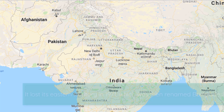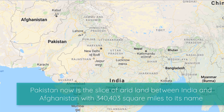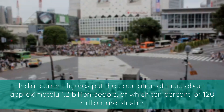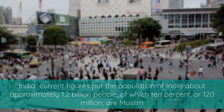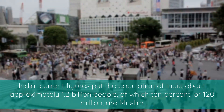Pakistan used to have territory on both the east and west sides of India. It lost its eastern territory in 1971, which was then renamed Bangladesh. Pakistan is now the slice of land between India and Afghanistan, with 340,403 square miles to its name.